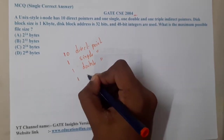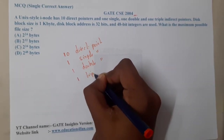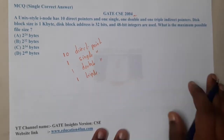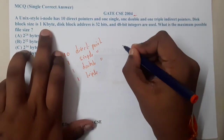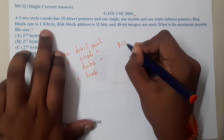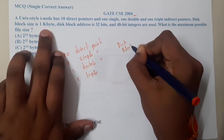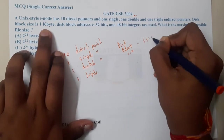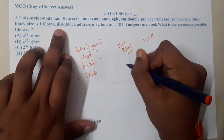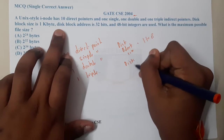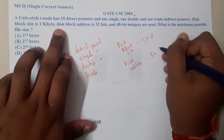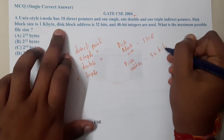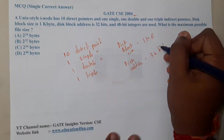And one triple indirect pointer. The disk block size is 1 KB, and a disk block address is 32 bits.